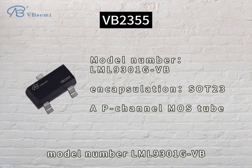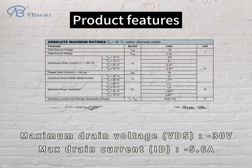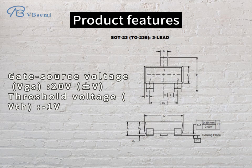Model number LNL9301-GVB. Product features: Maximum drain voltage VDS -30V, max drain current ID -5.6A, gate-source voltage VGS -20V, threshold voltage VTH -1V.